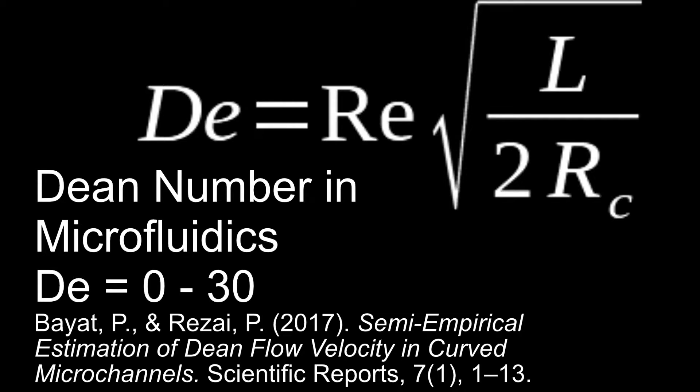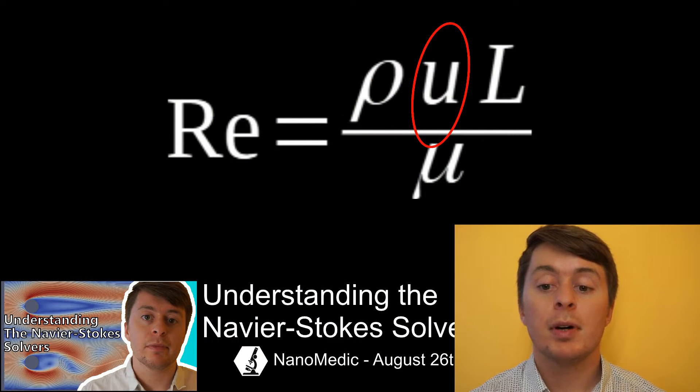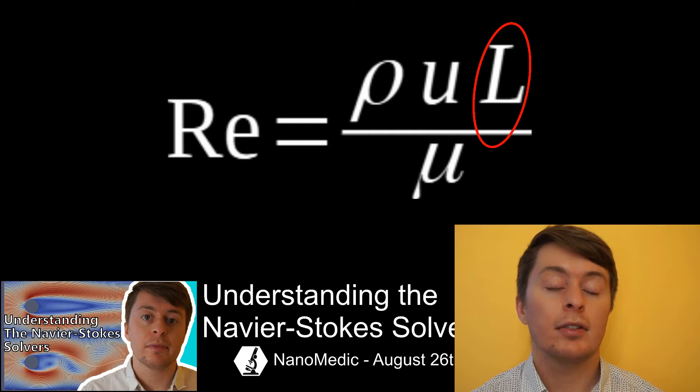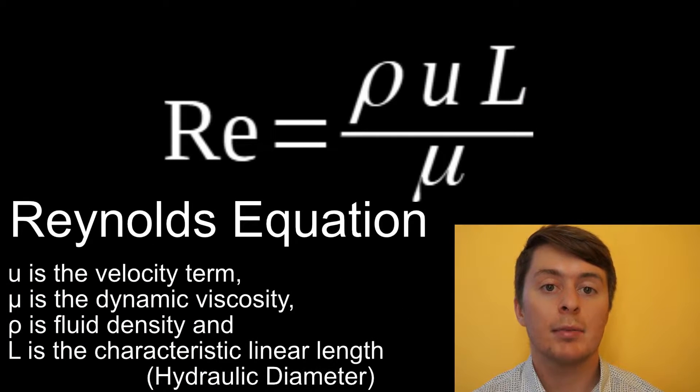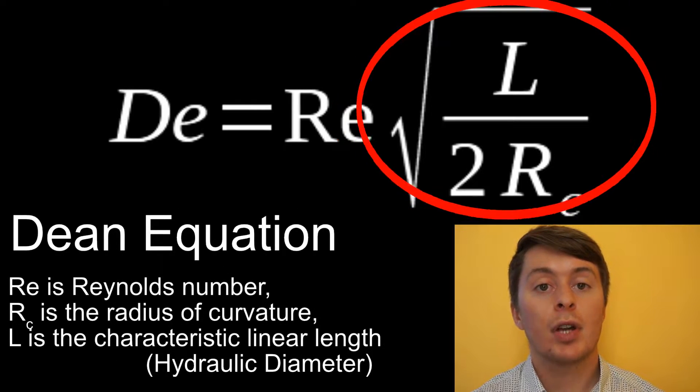However, in microfluidics at the micro-scale, the Dean number range changes between 0 to 30 for stable vortexes. The Dean number is an indicator of laminar turbulent flow which we explored before. This is then times by the square root of the characteristic linear length, which is the hydraulic diameter, divided by two times the radius of curvature.